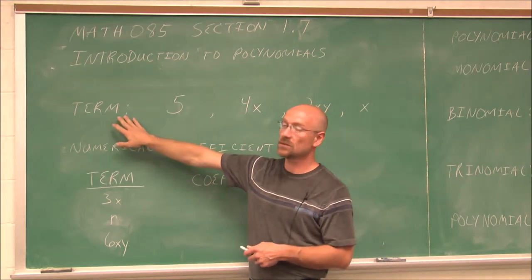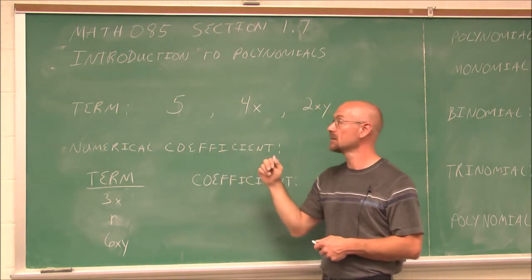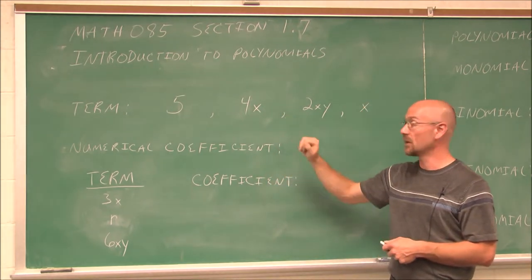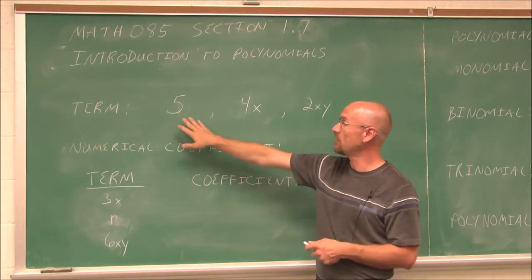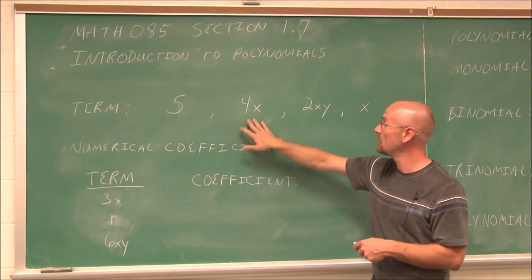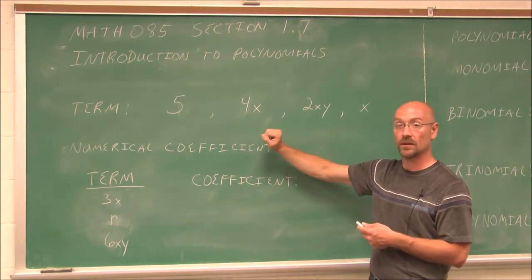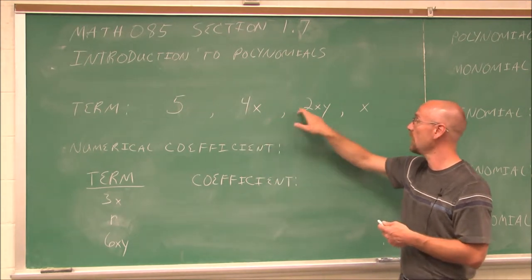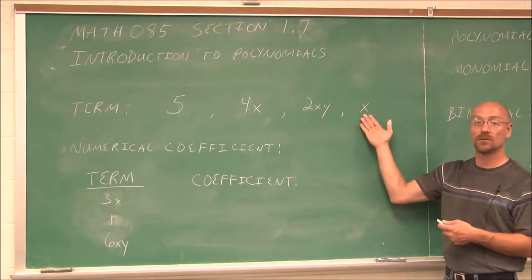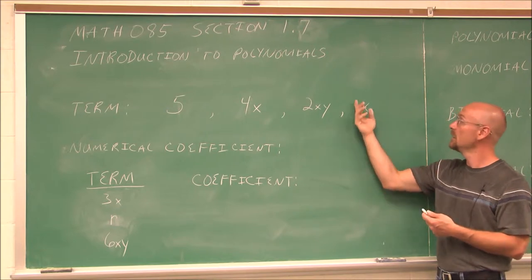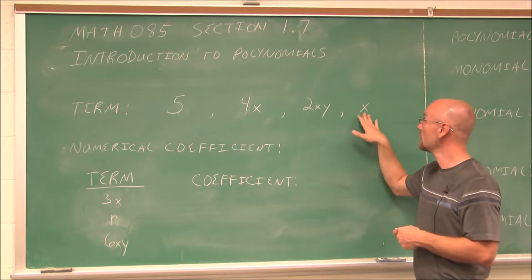The first thing we're going to define is term. A term is a number or the product of a number and a variable, or several variables. Here are some examples: we have 5, just a number — it's a term. We have 4x, meaning 4 times x. That's a term. We have 2xy, meaning 2 times x times y. And we have just x, whose coefficient is actually 1, even though it's not written.